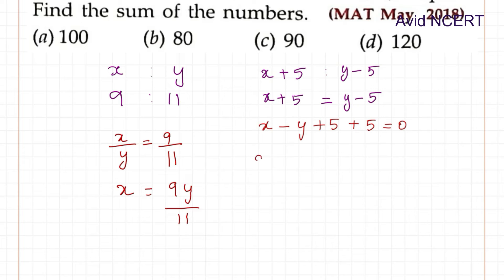So now substituting this x which is 9y by 11 minus y. You can take it as by 1 if it is confusing. Plus 10 equals 0.